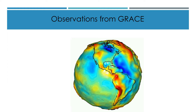GRACE is a gravitational field measurement system. When there is movement of water in a certain place, the gravity changes. By measuring the change in water storage in an area, we can quantify the spatial-temporal dynamics of water — including soil moisture and groundwater availability.